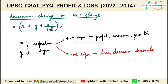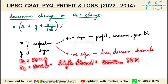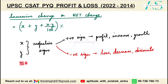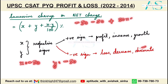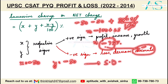For example: what single discount is equivalent to two successive discounts of 50% and 50%? Since both are discounts, x = −50 and y = −50. Applying the formula: −50 + (−50) + (−50×−50)/100 = −100 + 25 = −75. The negative sign indicates a discount, so the single equivalent discount is 75 percent.